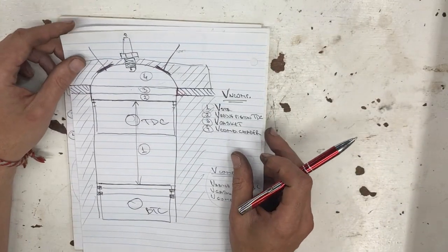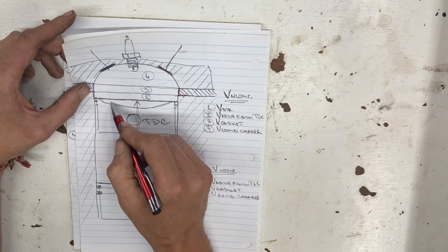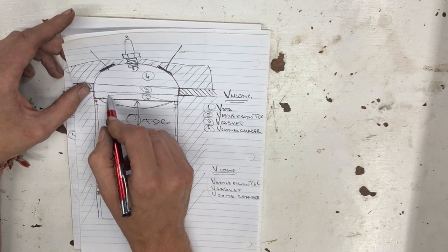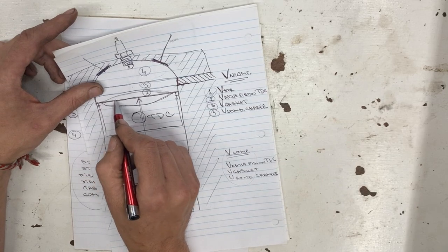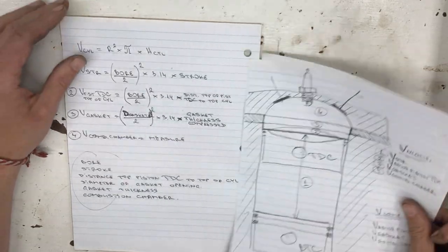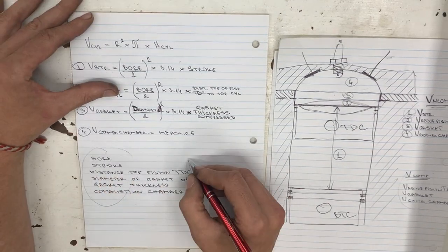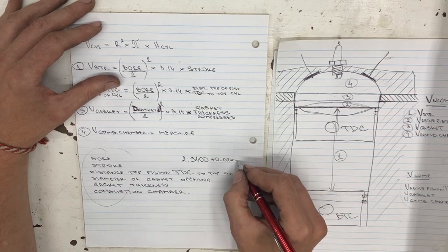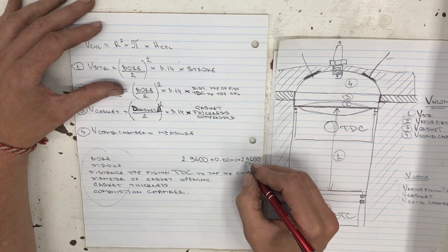It's also very important to consider the shape of the piston - some pistons have a dish, so that needs to be added to the non-compressed and compressed volume. Some pistons have a dome, and you'd subtract that. In our case we have a flat piston so we're not going to take that into consideration - I'm just mentioning it so you know. Now, more particular about the engine we have: the spec for the TR6 bore is 2.9400 inches, but we're reboring the block to plus 20 thou, so our total bore is going to be 2.9600 inches. Our stroke is 3.74 inches.